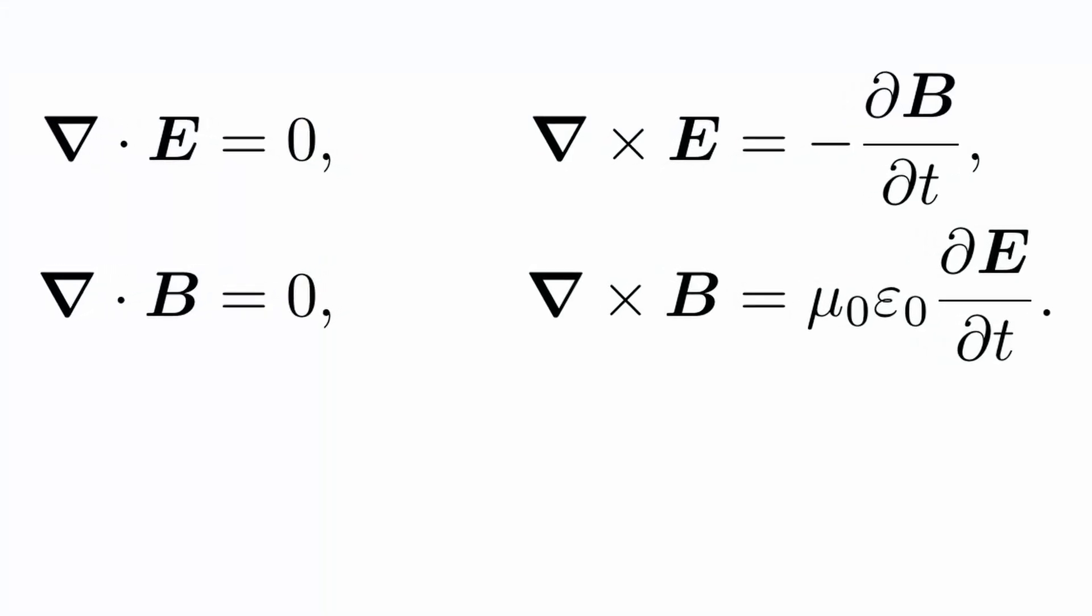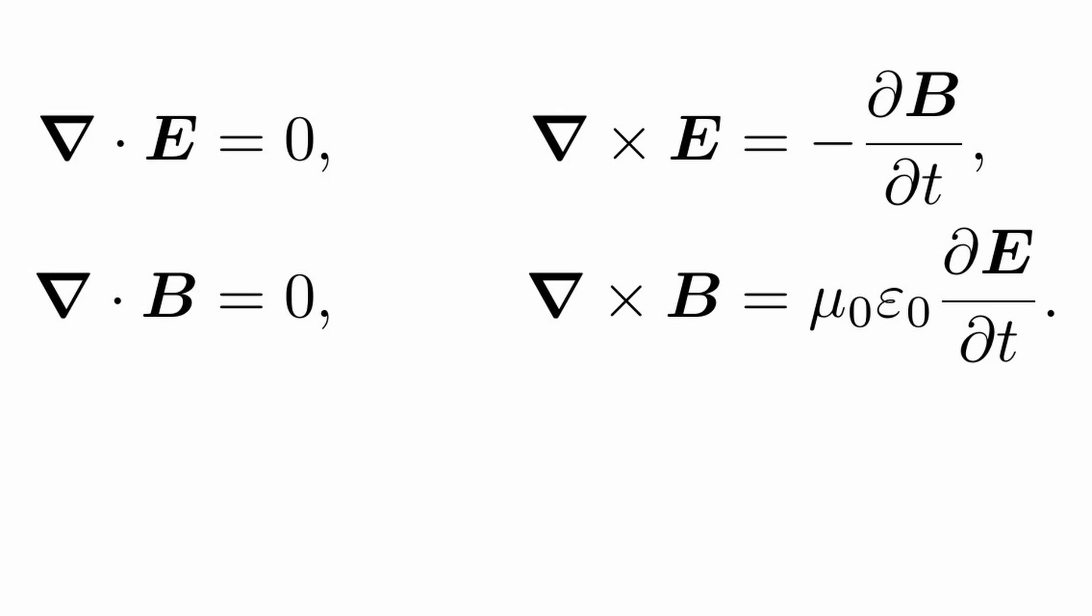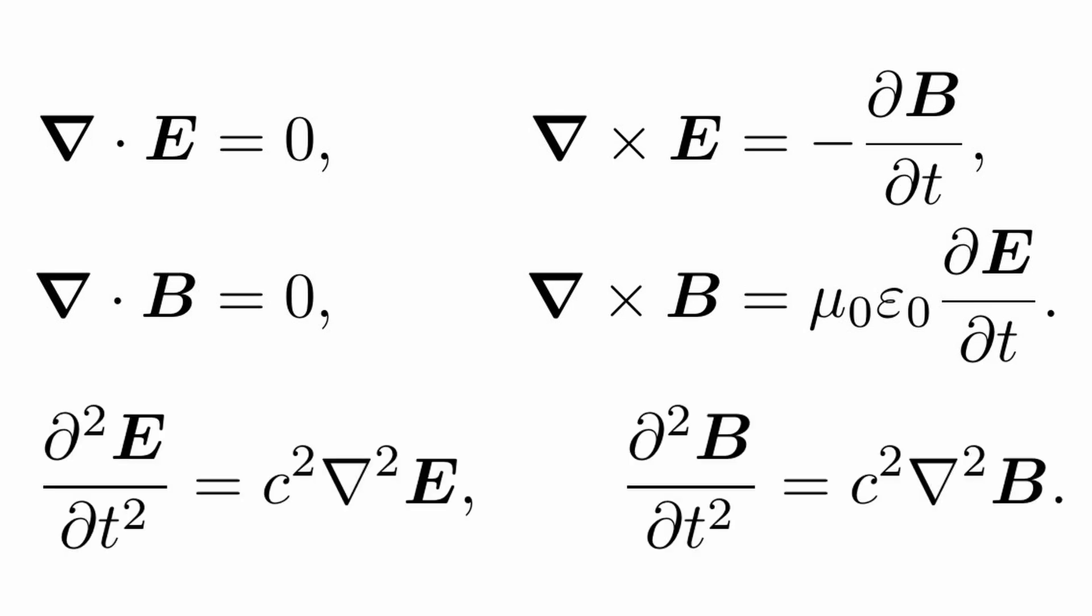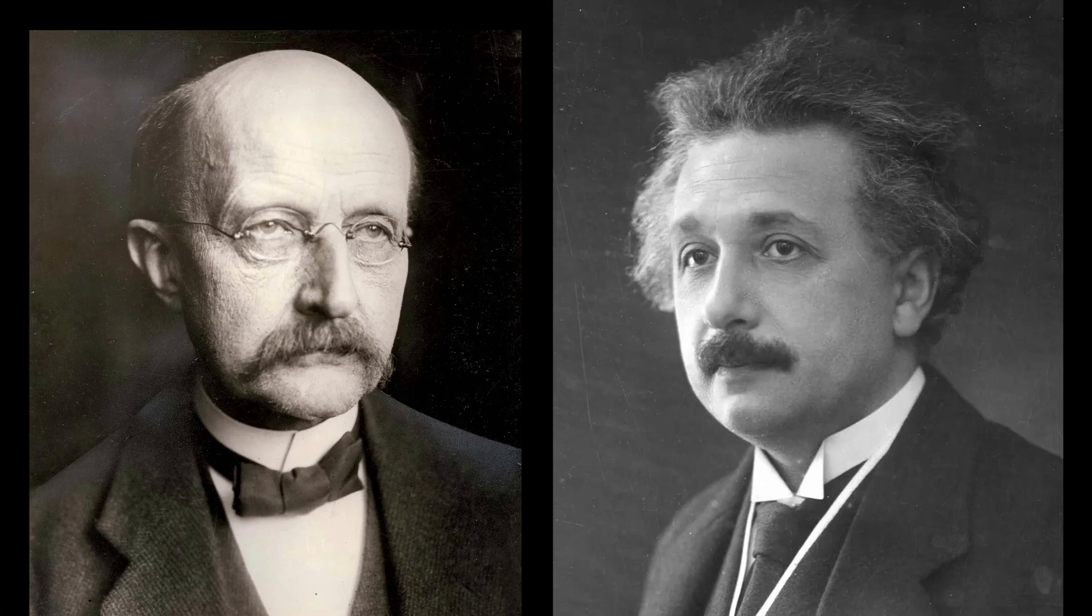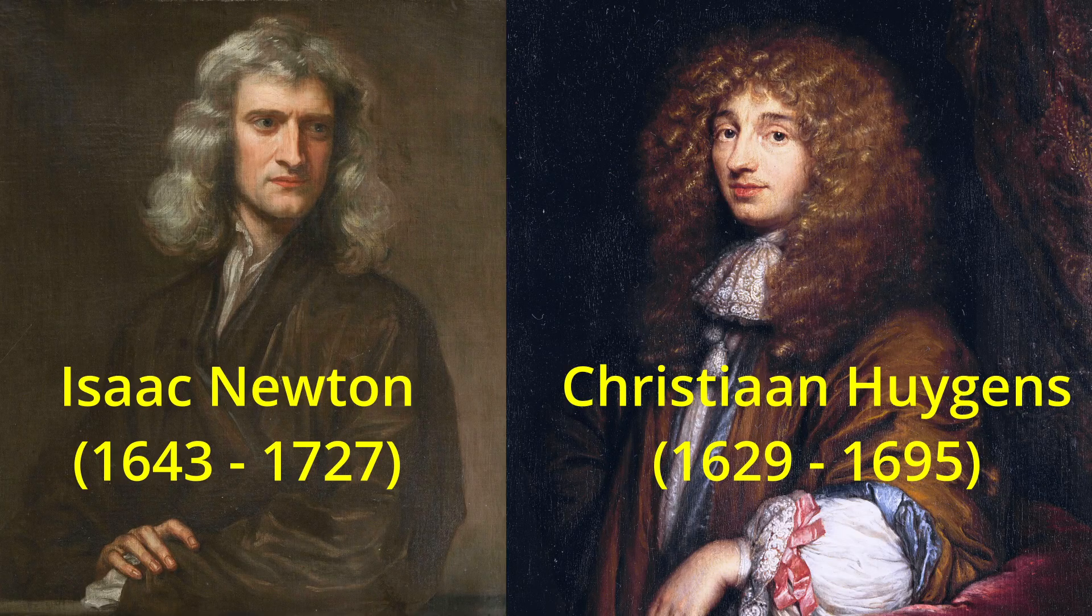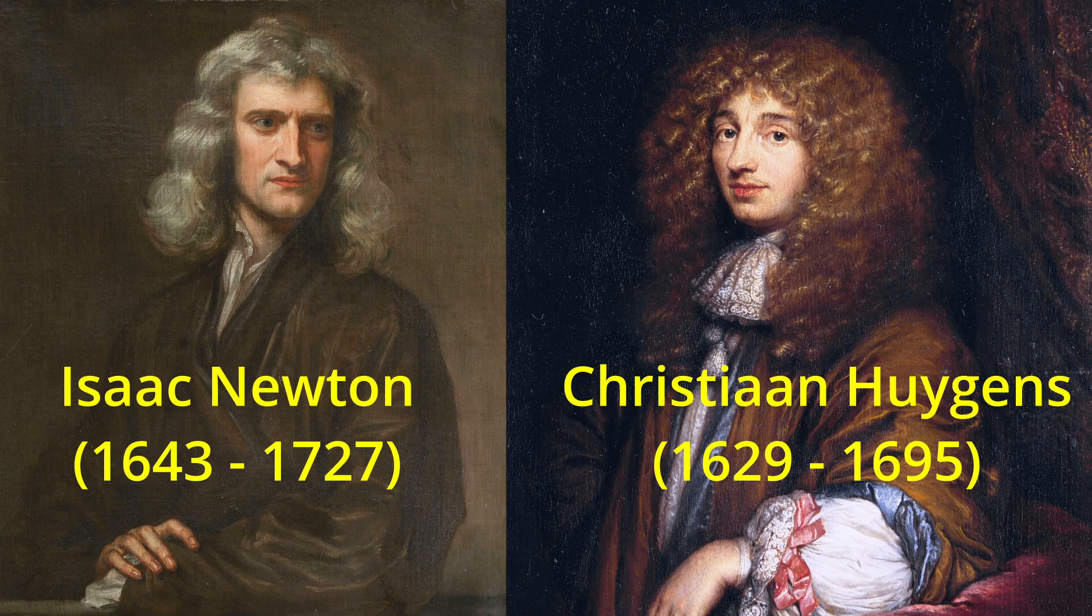Maxwell's equations in the 1860s proved that light was a wave, satisfying a wave equation. But now Planck and Einstein, and later Compton, seemed to show that light was a particle with a quantized energy. This seemed to be moving physics back two hundred years, to the time when Isaac Newton and Christiaan Huygens were arguing whether light was a particle or a wave.